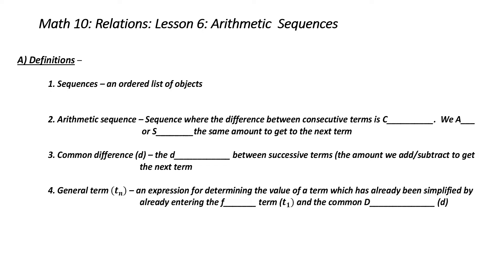A sequence is an ordered list of objects. What is an arithmetic sequence? That's a sequence, or ordered list of objects, where the difference between consecutive terms — that's terms one right after the other — is a constant.